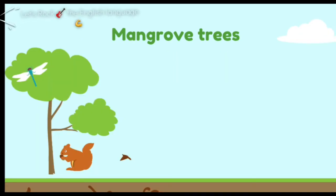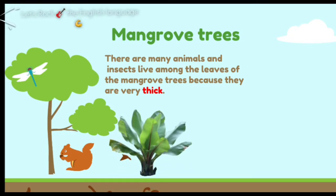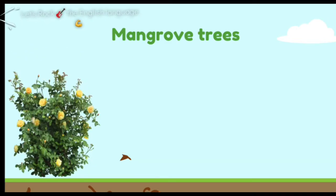Also, many small animals and insects live among the leaves of the mangrove trees because they are very thick. So the small animals hide among them from their predators — from the tigers, from the lions, and so on.